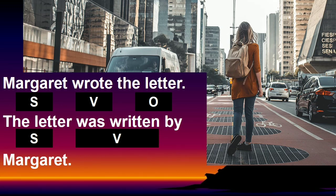The next sentence: 'The letter was written by Margaret.' Look at the subject again — it is 'the letter.' The verb is 'was written.' We can see that the subject, the letter, receives the action, namely 'was written.' The subject receives the action — so this sentence is passive.